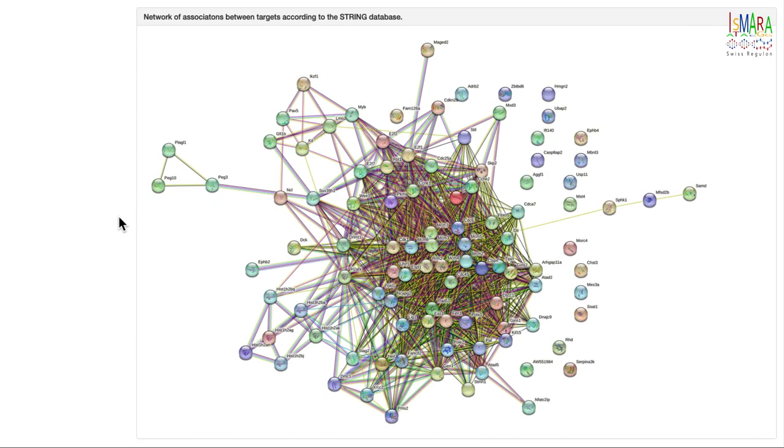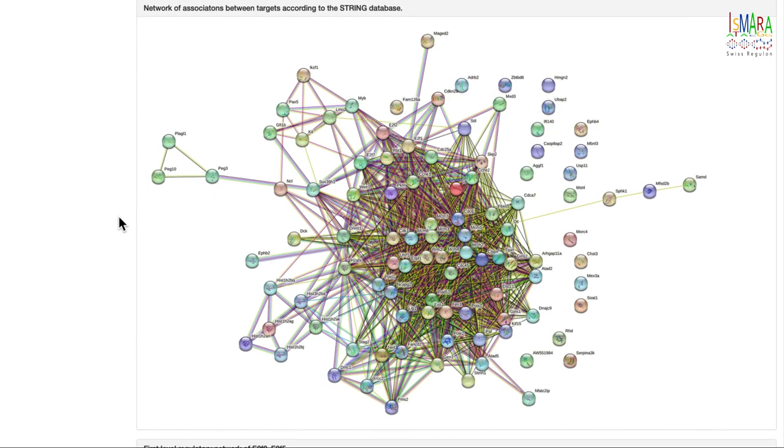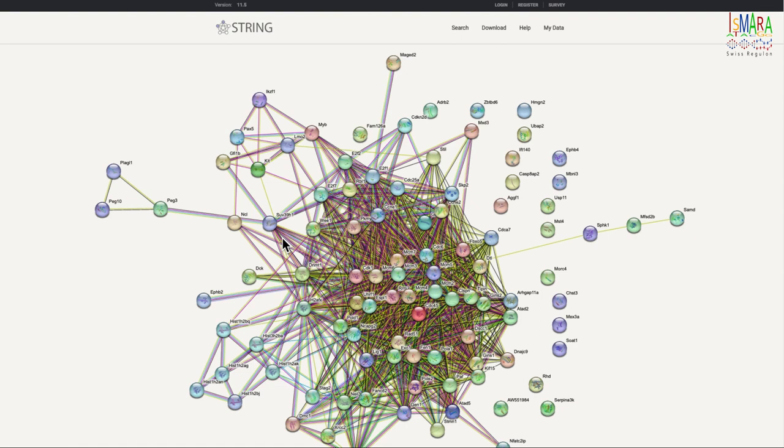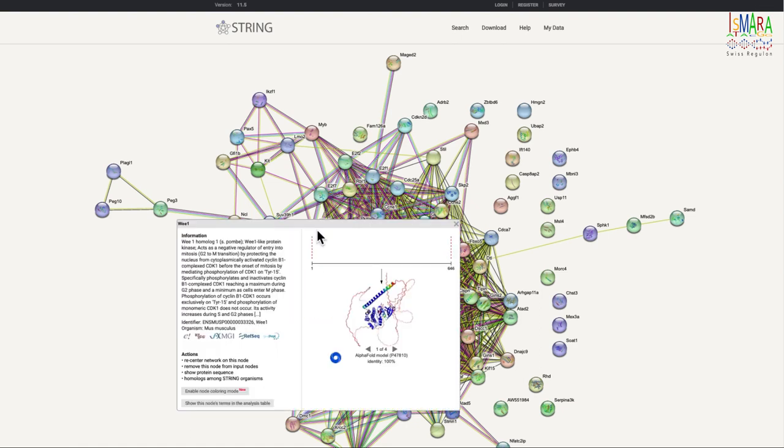ISMARA also provides a number of tools to explore the set of target genes of a motif. First is a STRING database analysis. This picture shows known relationships between the top 100 targets of the motif, as provided by the STRING database. If you click on the image, you will be taken to the STRING website, where you can explore what's known about these genes in detail.